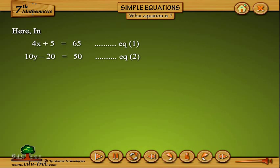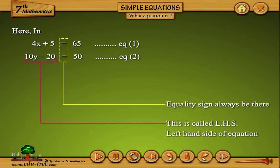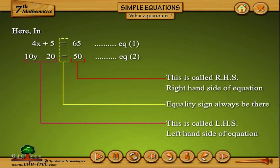Here, in an equation, the equality sign will always be there. This is called LHS, left hand side of equation. This is called RHS, right hand side of equation.